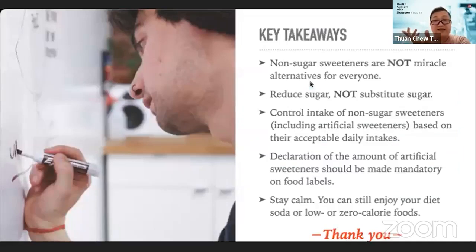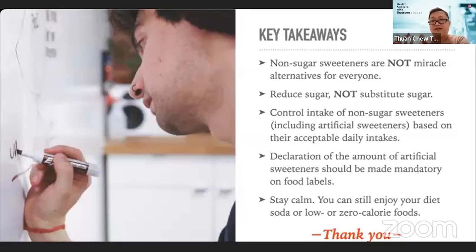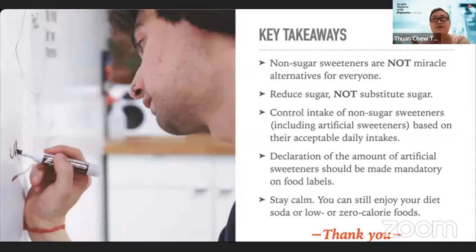Key takeaways from today's session: Non-sugar sweeteners are not a miracle alternative for everyone, but for diabetes patients, they may be a better choice. If you want to reduce weight, don't simply substitute sugar with artificial sweeteners — control your overall intake. Know your acceptable daily intake: for aspartame it's 40 milligrams per kilogram body weight; other sweeteners like acesulfame potassium have their own ADI values, which you can find from WHO or FDA.